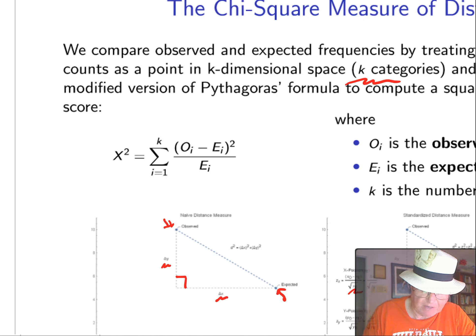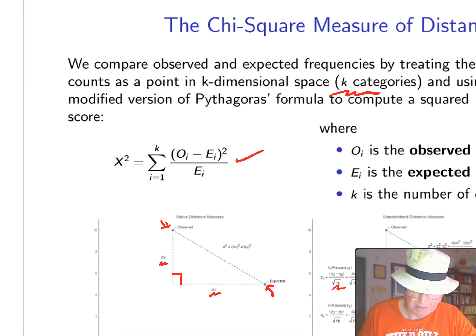So we get this modified formula. And here's the modified formula right there. So that's how we do a chi-square score.